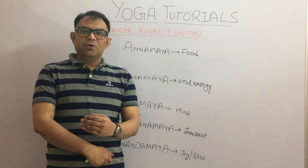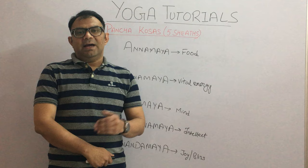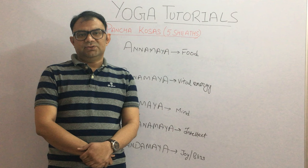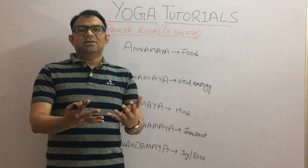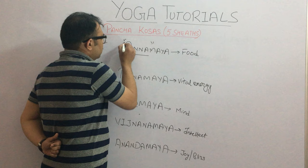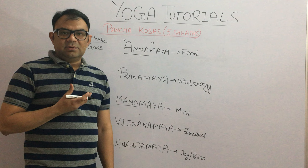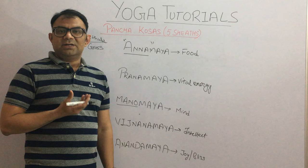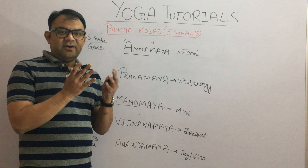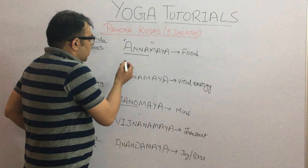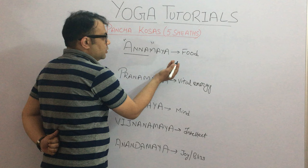When Bhrigu went to the woods and did some research, he came back after some time and told his father: I found an answer, and the answer was that the whole universe is made up of Anna. Anna means food — that gross thing — everything is made up of this. Varuna was happy about his son's research, saying that he had found the first basic principle of life, that is Anna. And this is basically the Annamaya Kosha.